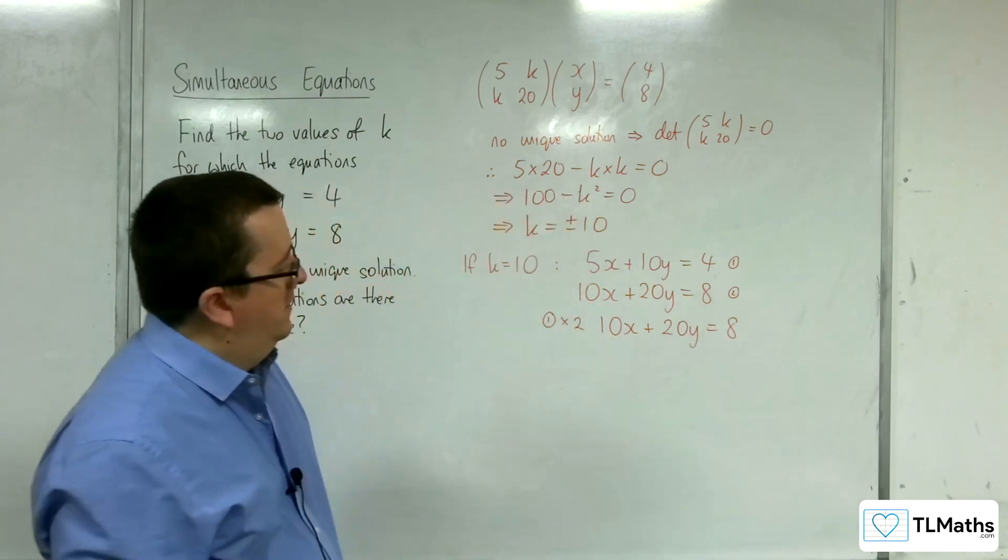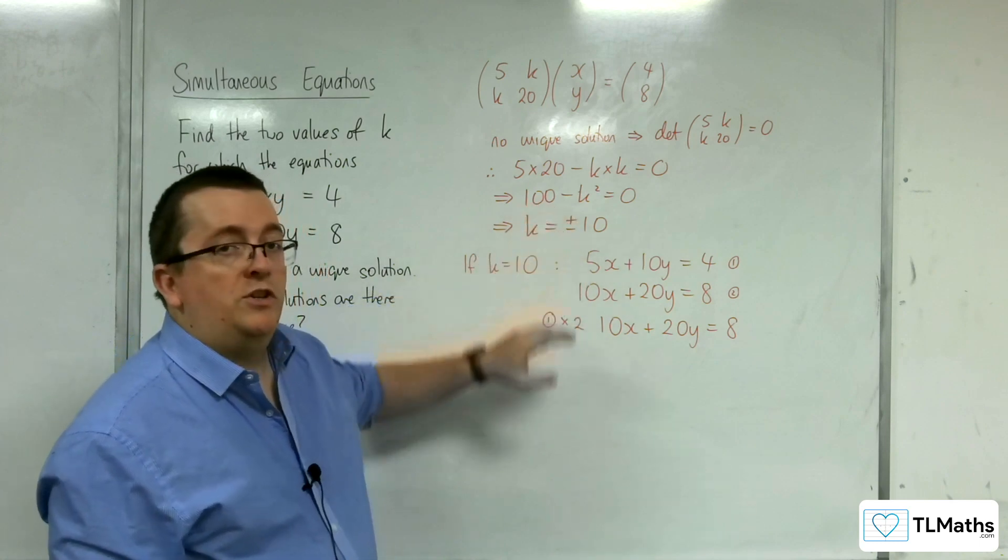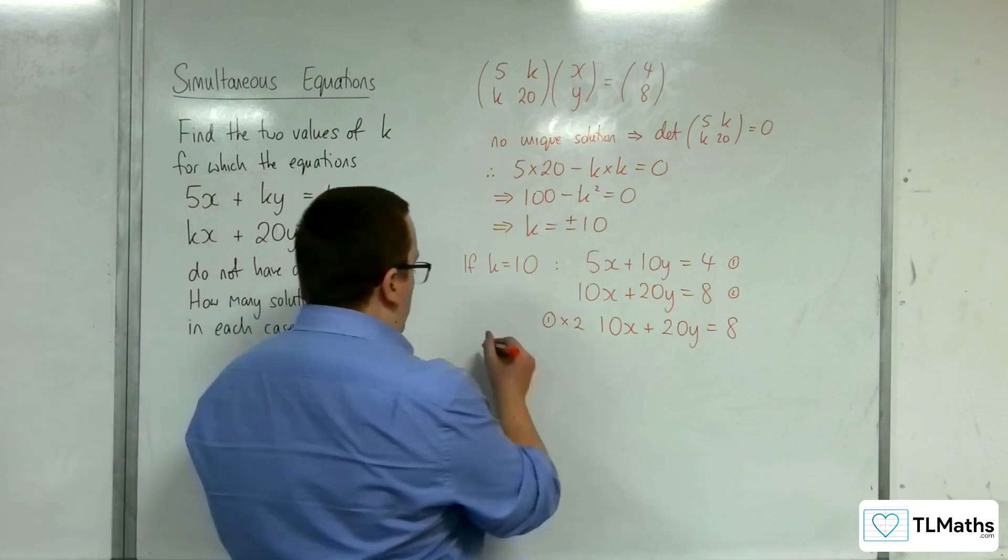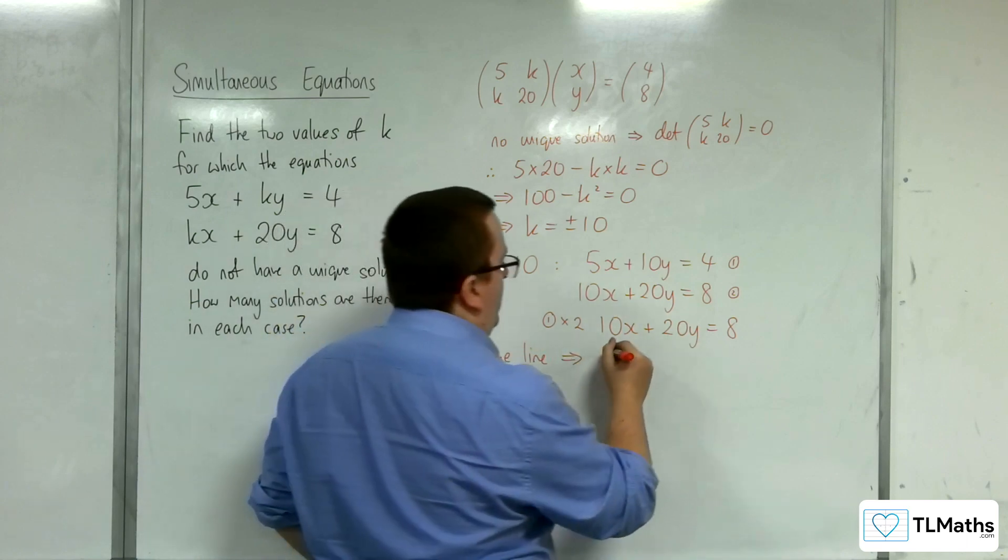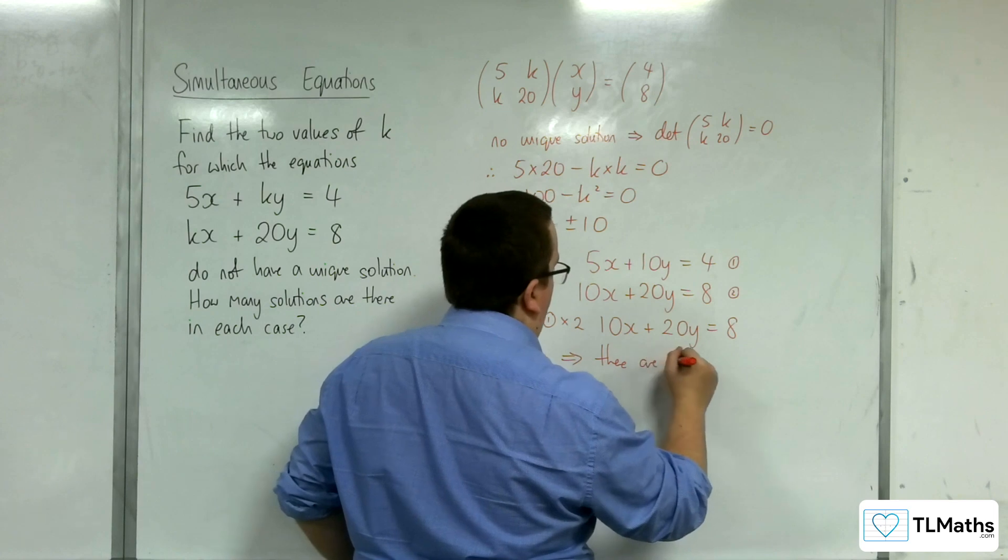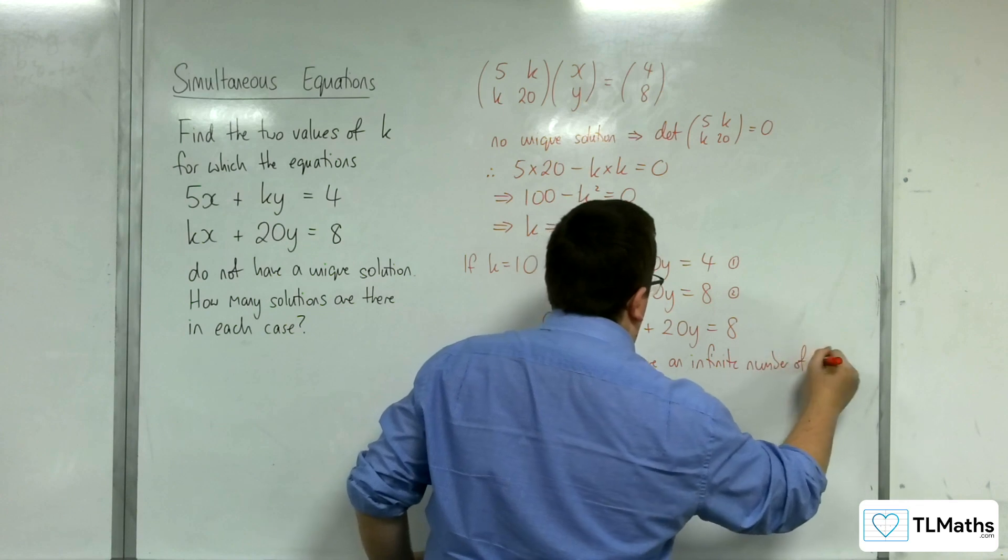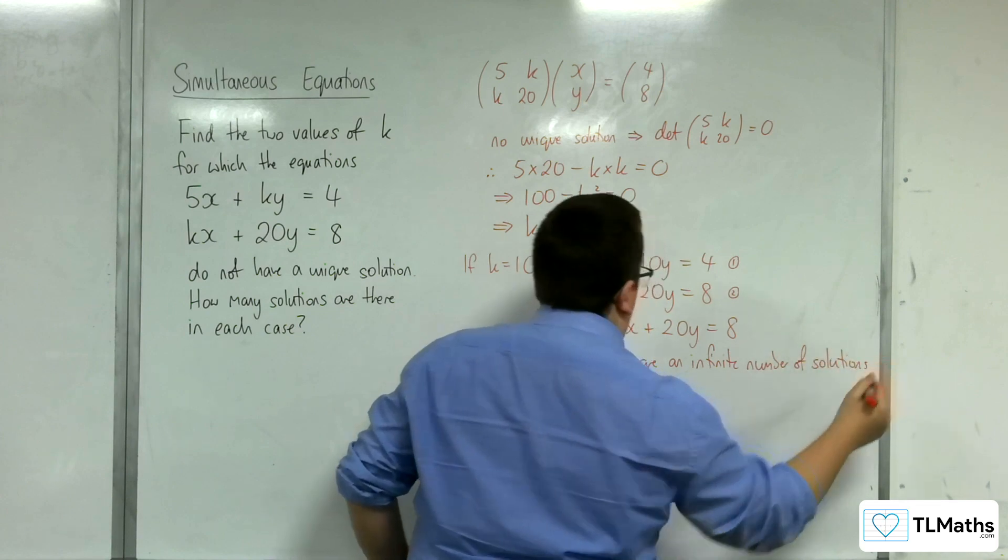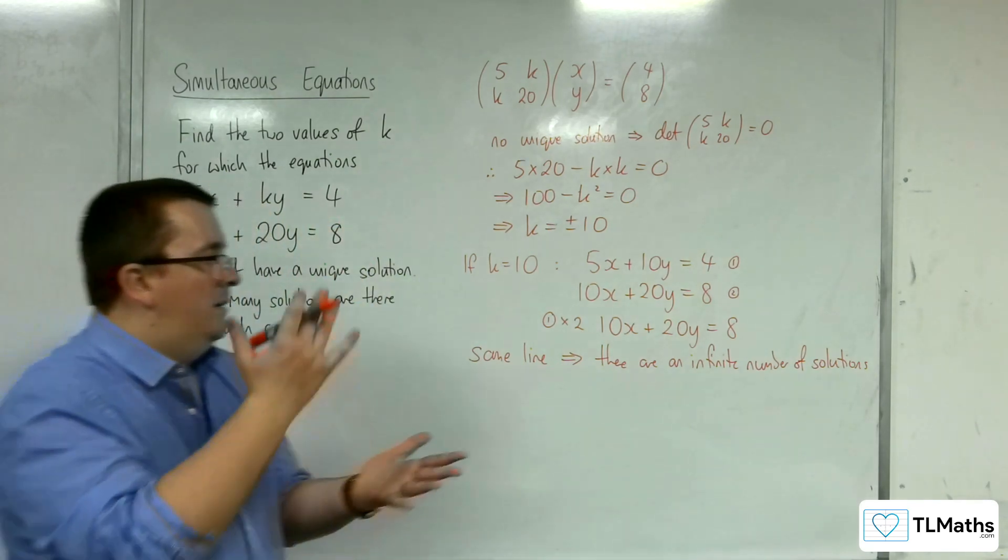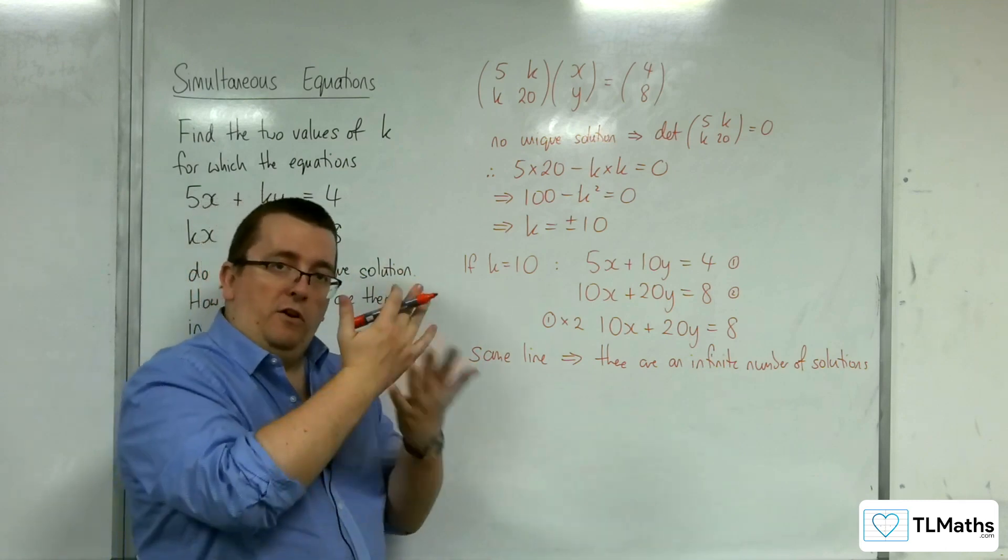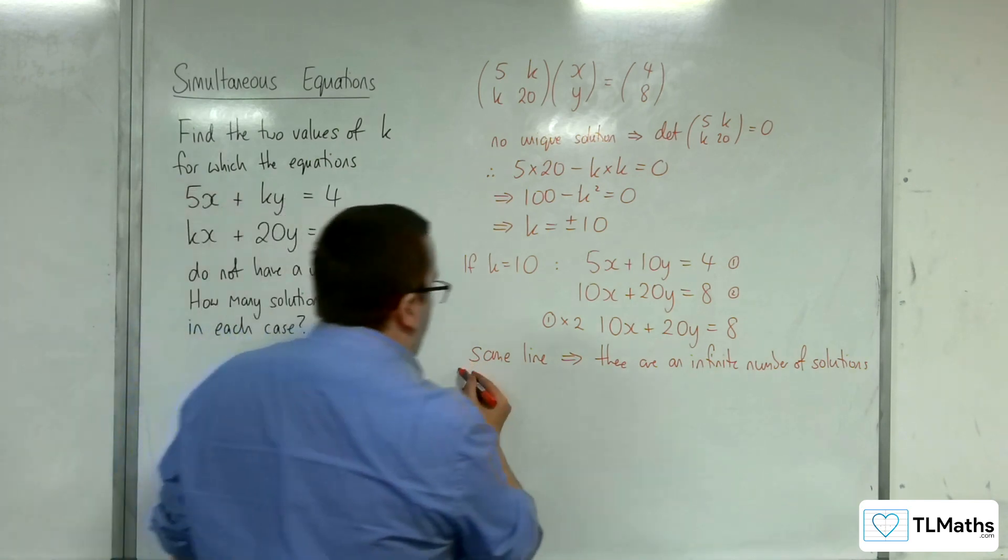So actually, this would be identical to that. So that must mean that these two equations actually represent the same line. So we have the same line, which implies that there are an infinite number of solutions, because one line is overlapping the other completely. So they are true and they both work for every single value of x and y on that line.